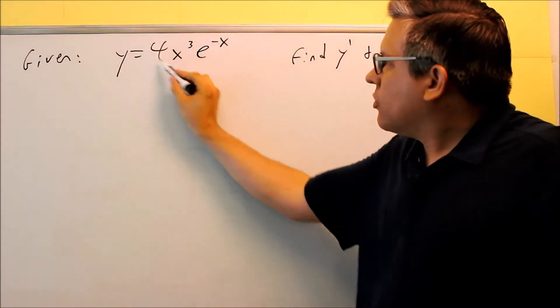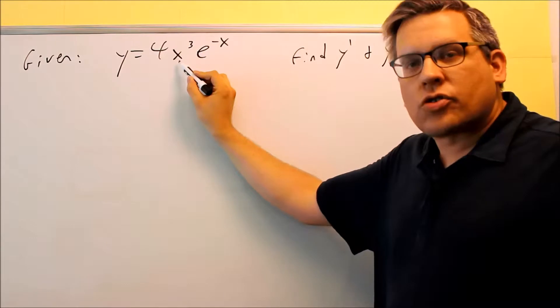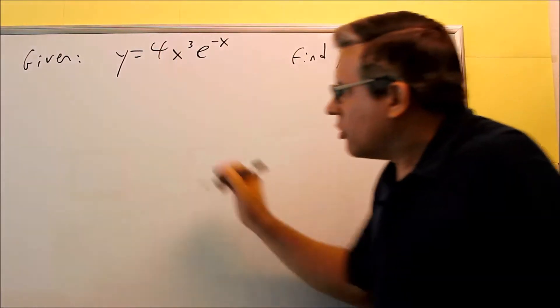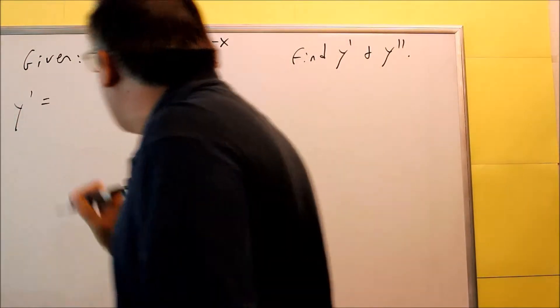When I set up the product rule, I'm going to use 4x³ as the first term and e^(-x) as the second term. So when we do that, it'll look like this.